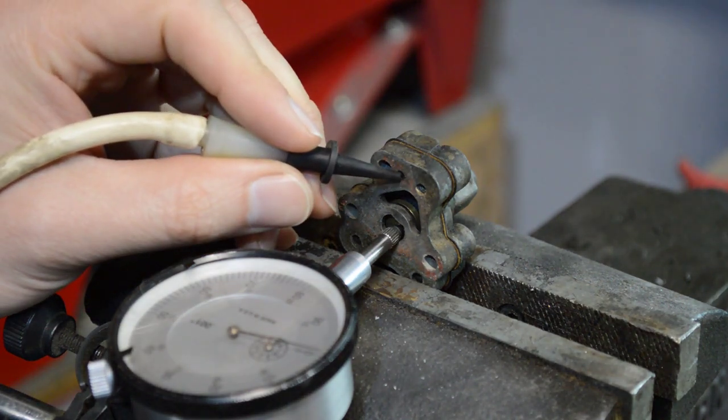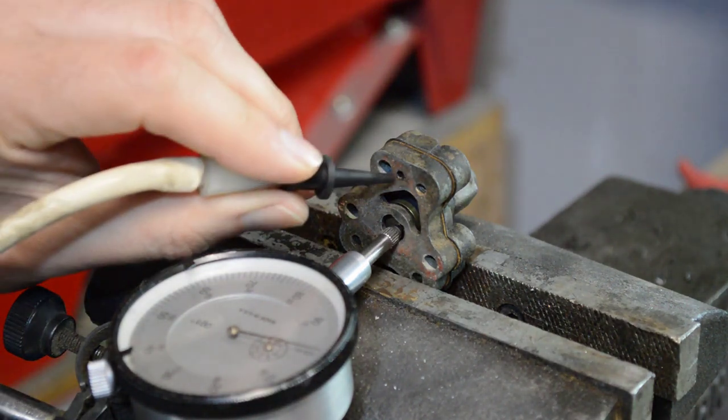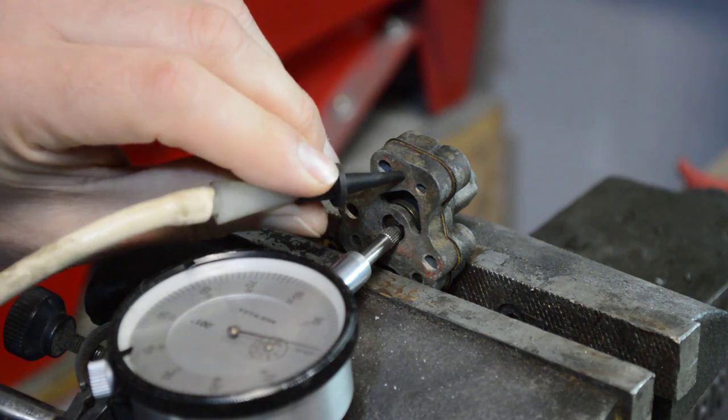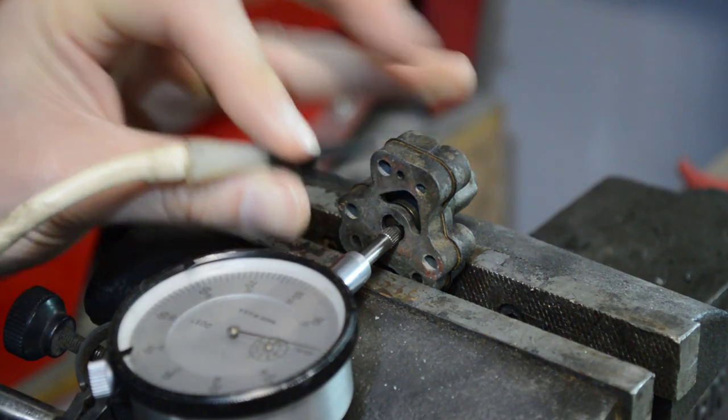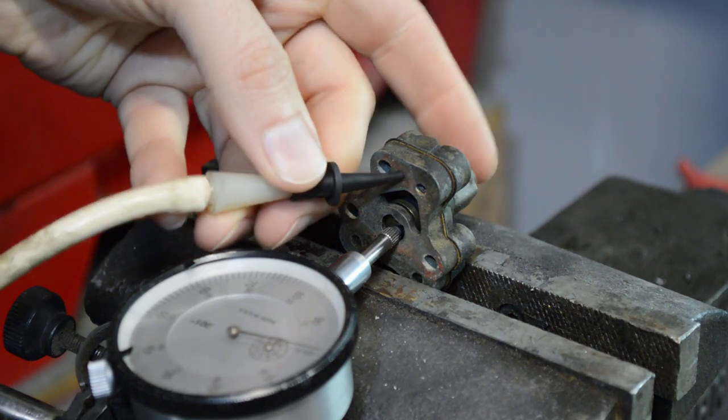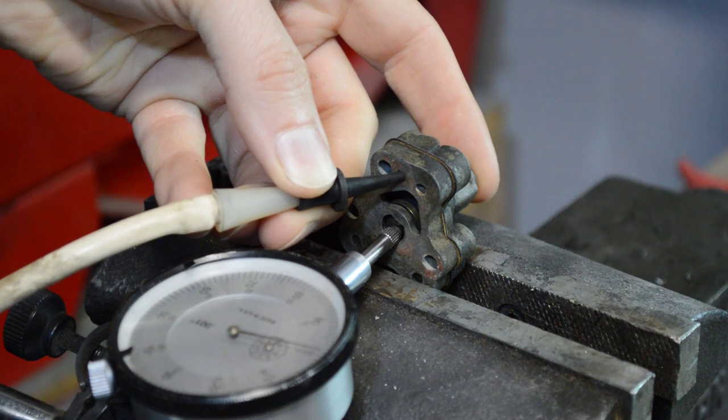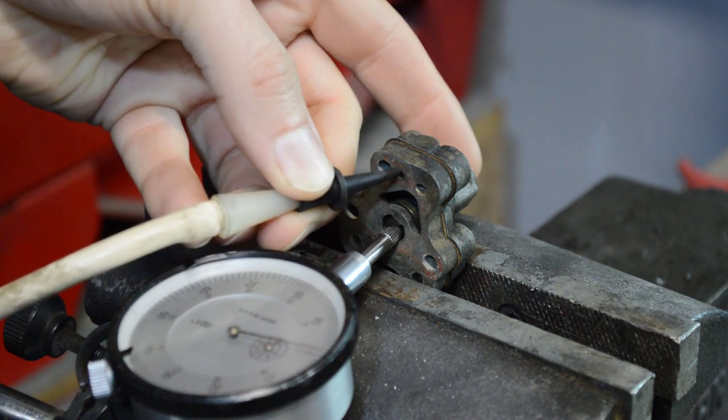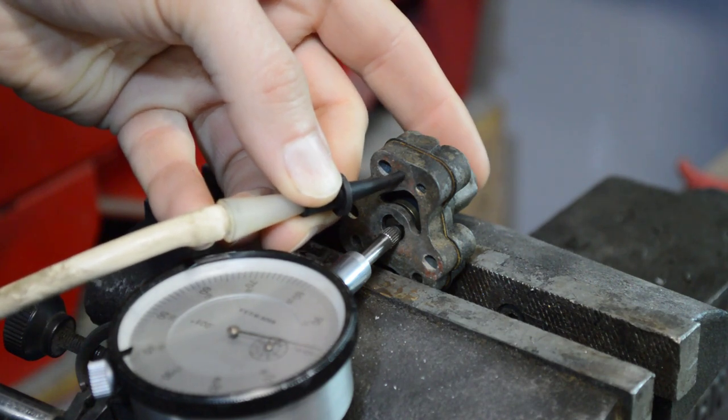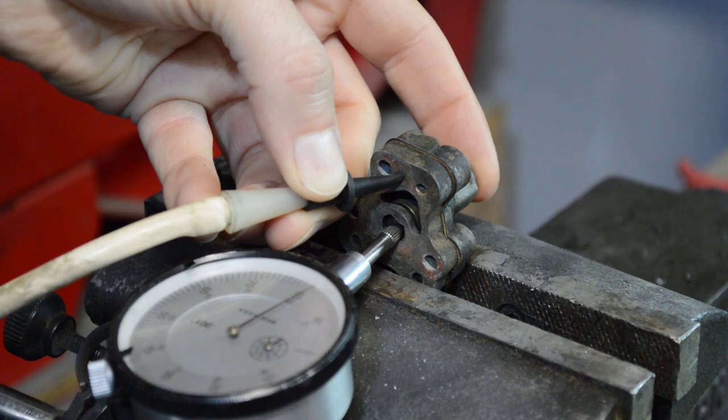This up here is the port that the vacuum would be attached to. So we'll hook up our vacuum gauge to this. I happen to know that this one's already leaking, so I'm going to put my finger on the side that's leaking just to plug it off, and as we add some vacuum to it, if I can get it in there correctly...